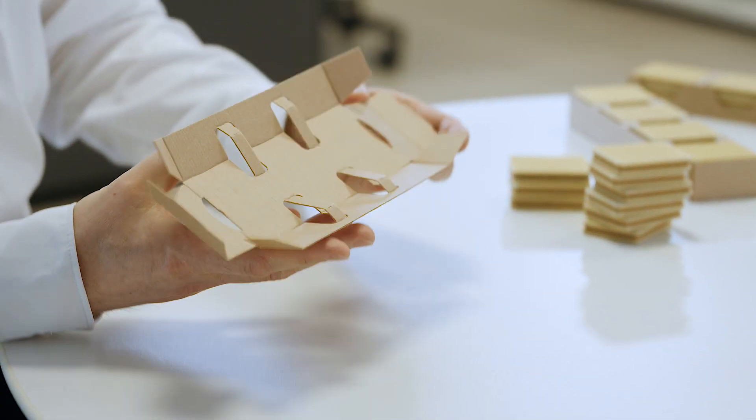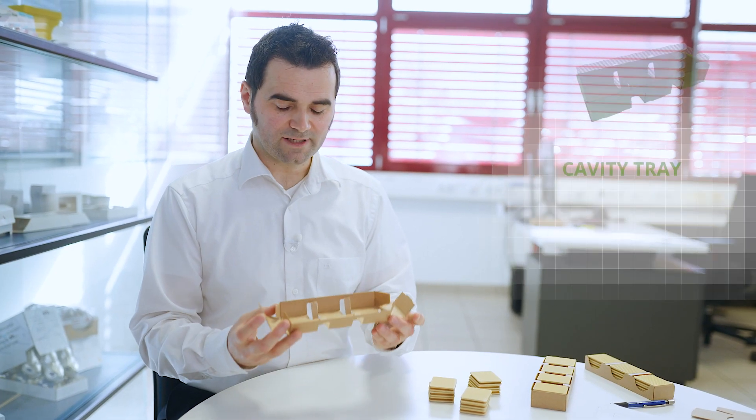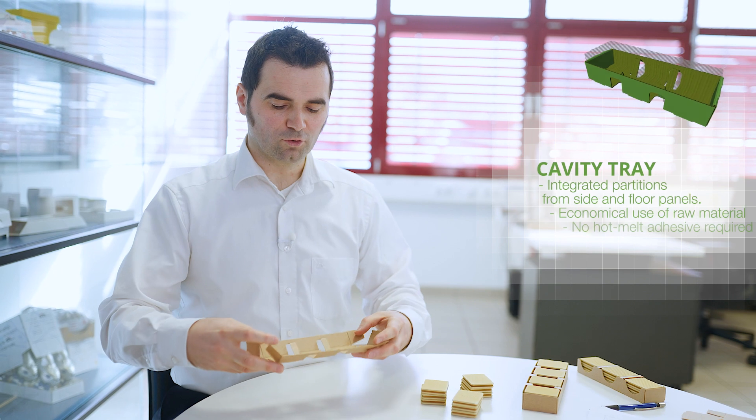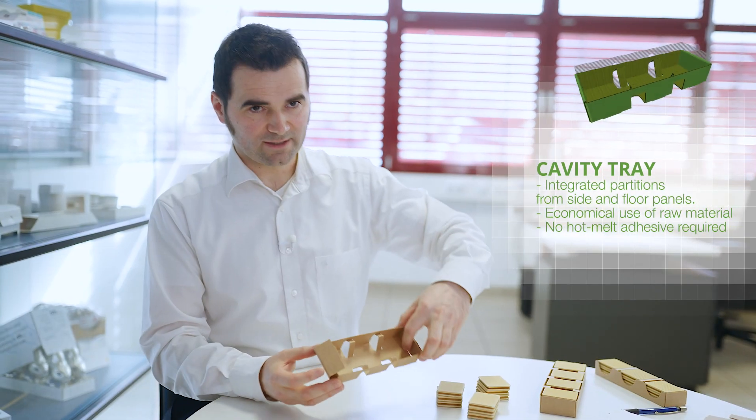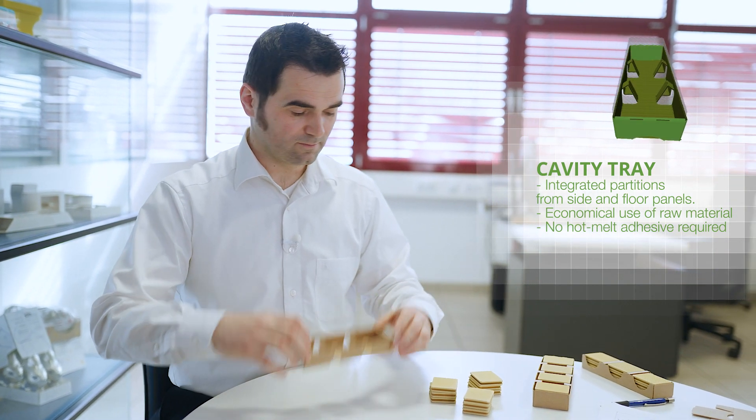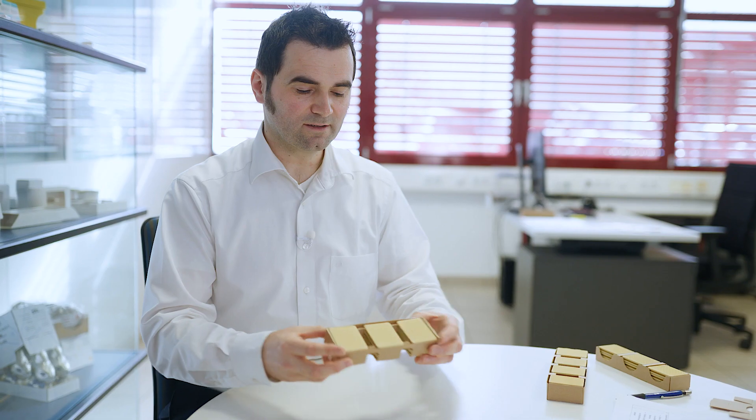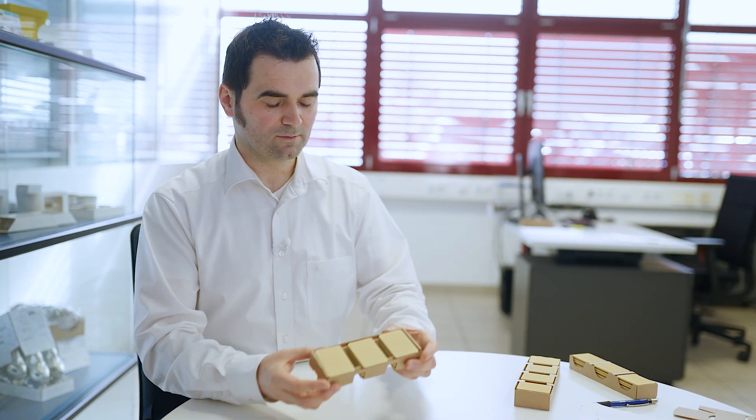Here we have a design that has been established on the market for some time. It is a cardboard tray, which has a relatively economical cutout, with a fold here that locks into the bottom panel here. That means we do not need a single drop of hot melt when assembling. The products, in this case cookies, are perfectly held in position via these partitions, which emerge from the outer wall.